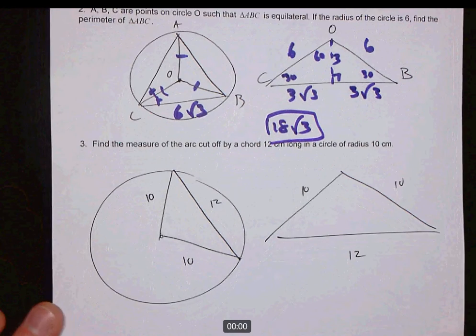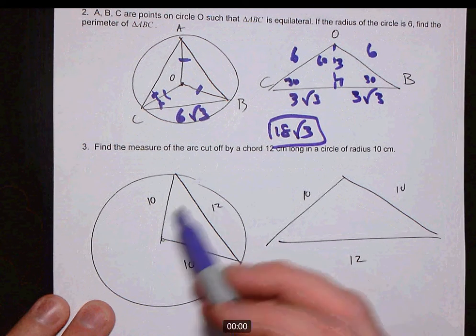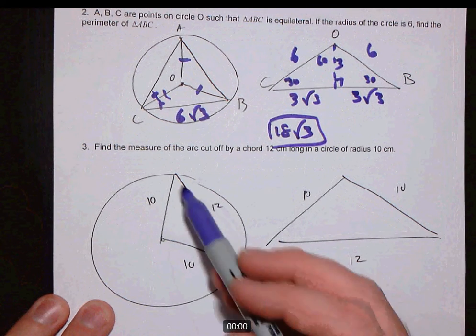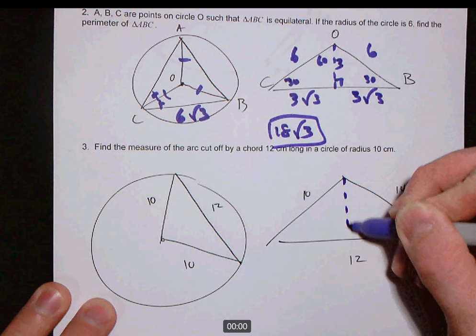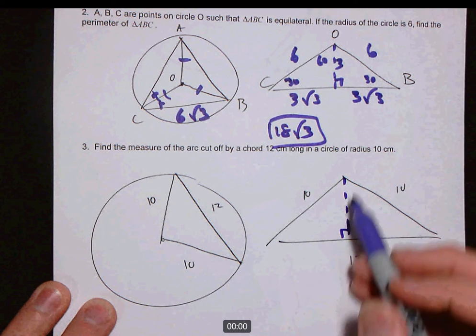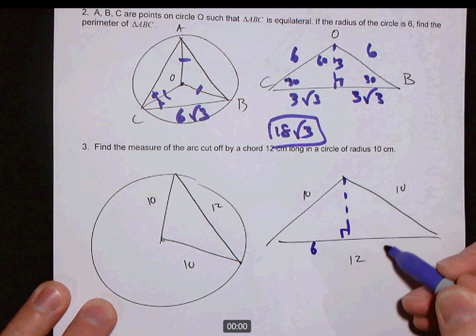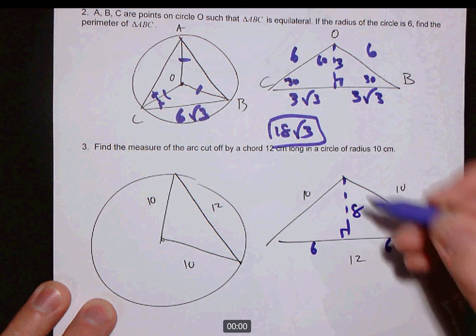In this last problem, you're trying to find the measure of an arc, given that the radius is 10 and the chord is 12. Again, this is an isosceles triangle problem, pull it out, drop the altitude. These are 6, so this is now a 6-8-10 triangle.